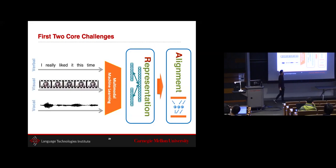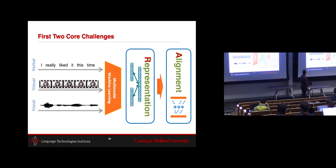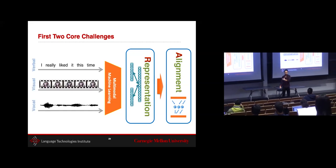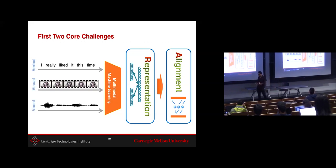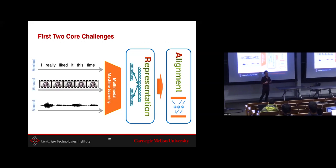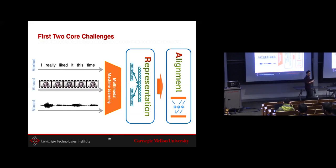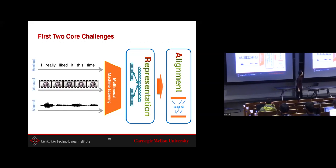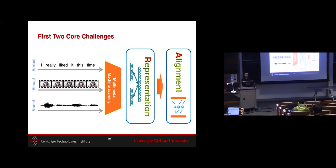The first two core challenges are what everyone would expect. First is representation: given different modalities — for example, multimodal communicative behaviors — how do you learn a good representation? Second, and most unique to multimodal, is alignment: how do you bring together semantically corresponding elements in one modality with those in another? Let's look at representation first.